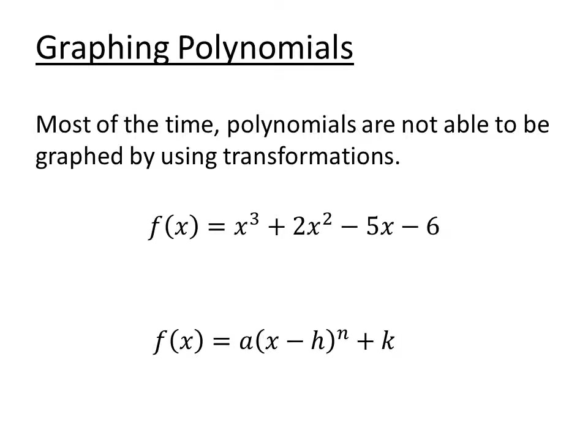Unfortunately, we cannot use transformations to graph all polynomials. For example, f of x equals x cubed plus 2x squared minus 5x minus 6 cannot be factored into the form of some number times (x minus h) to the third plus some number. It simply does not factor that way, so we must rely on other methods to graph this polynomial.